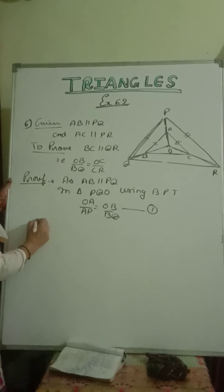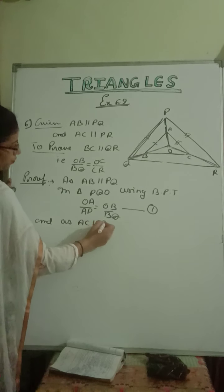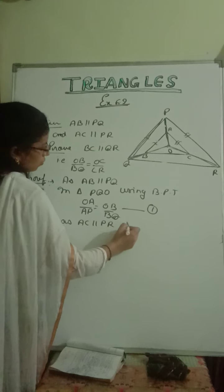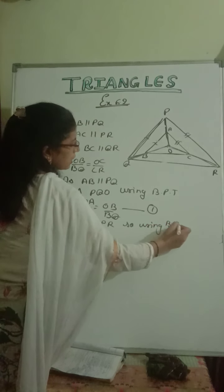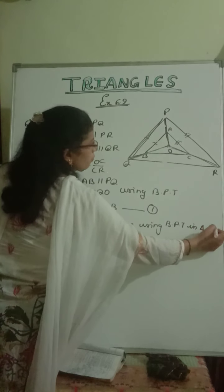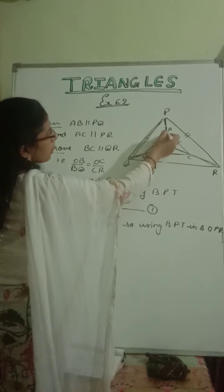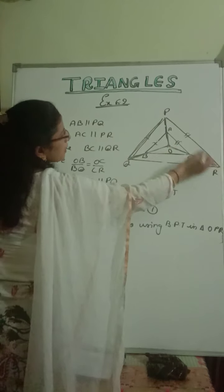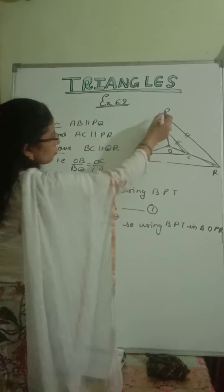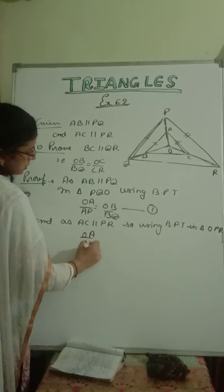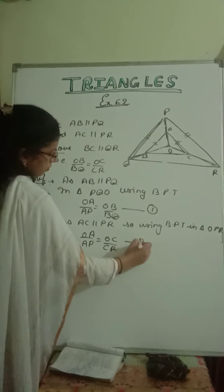Same way, we are given that AC is parallel to PR. So using the basic proportionality theorem in triangle OPR, if this side is parallel to the opposite side, then OA upon AP is equal to OC upon CR. This is equation number 2.